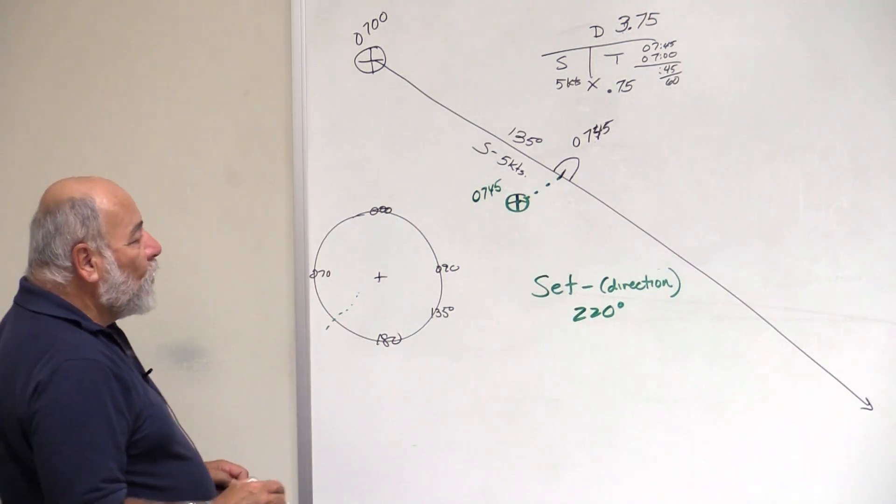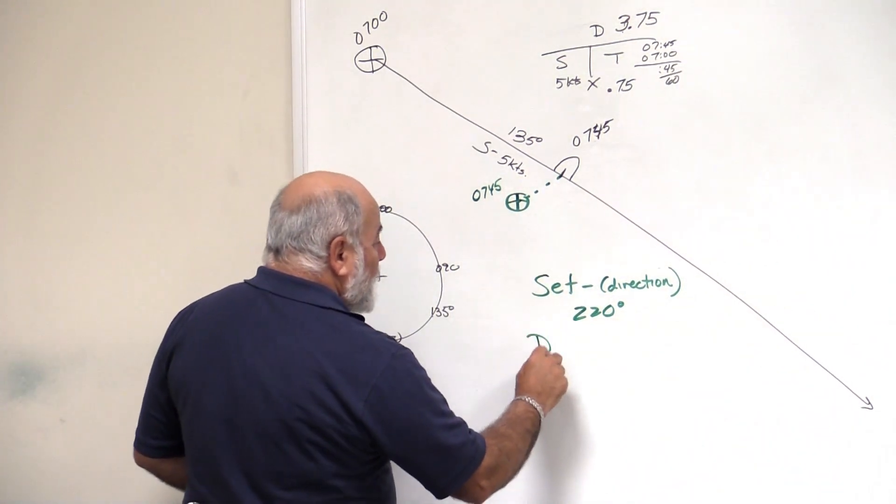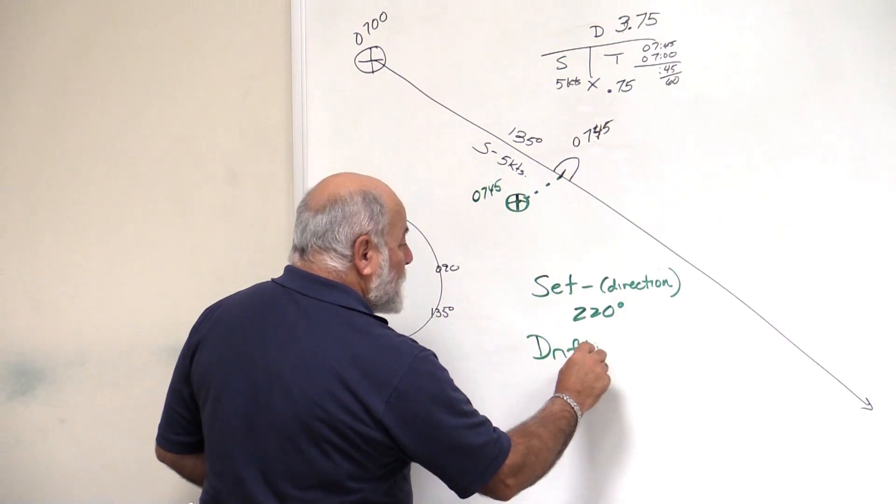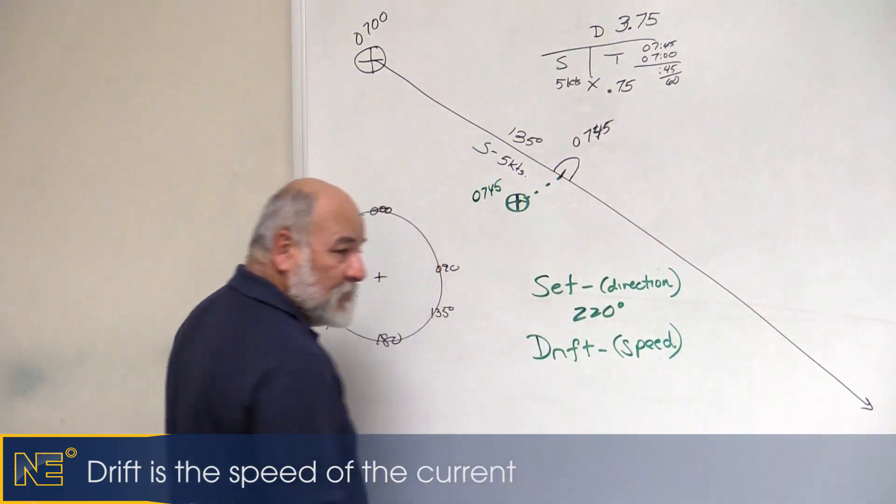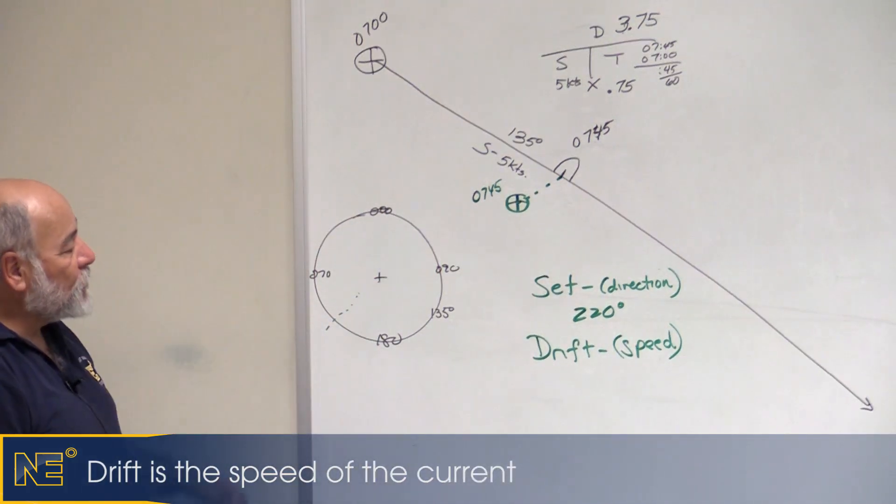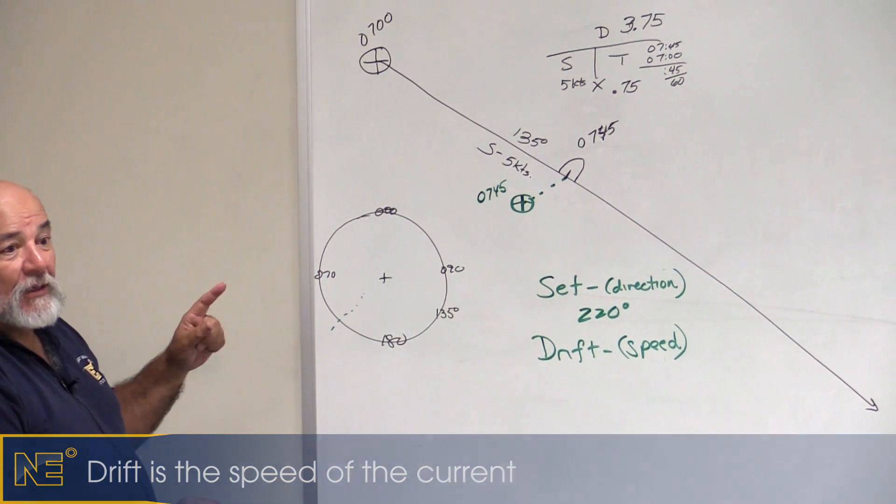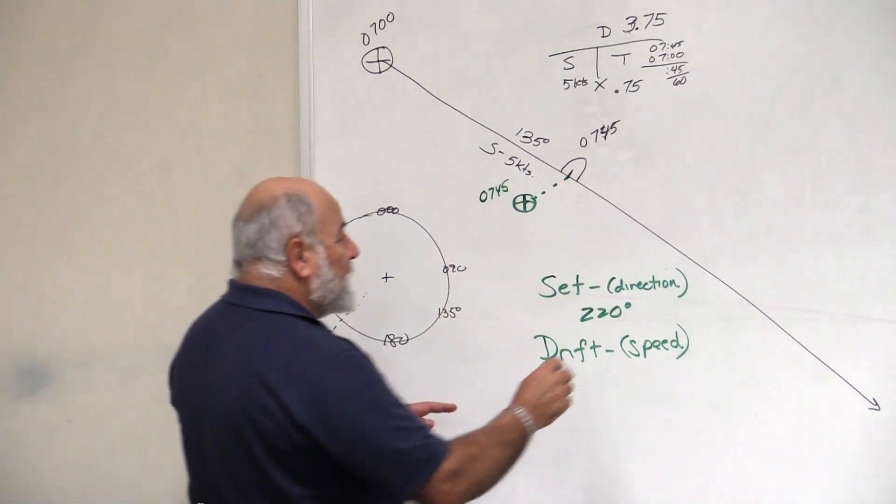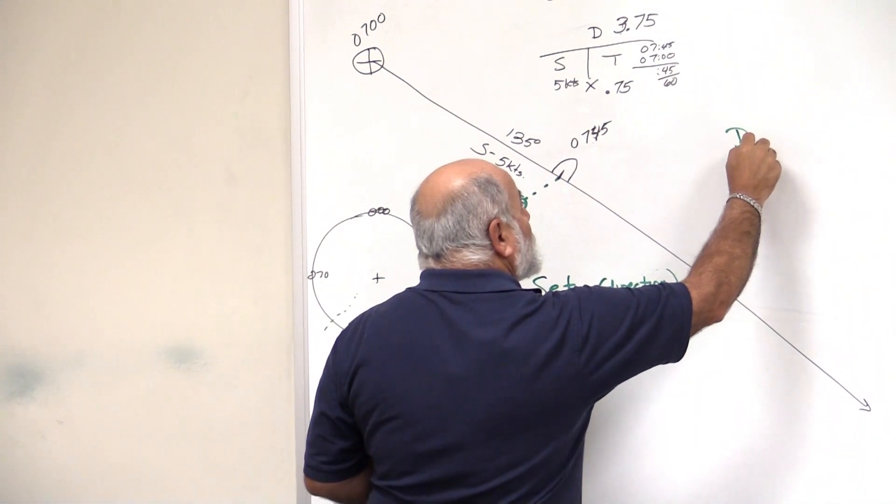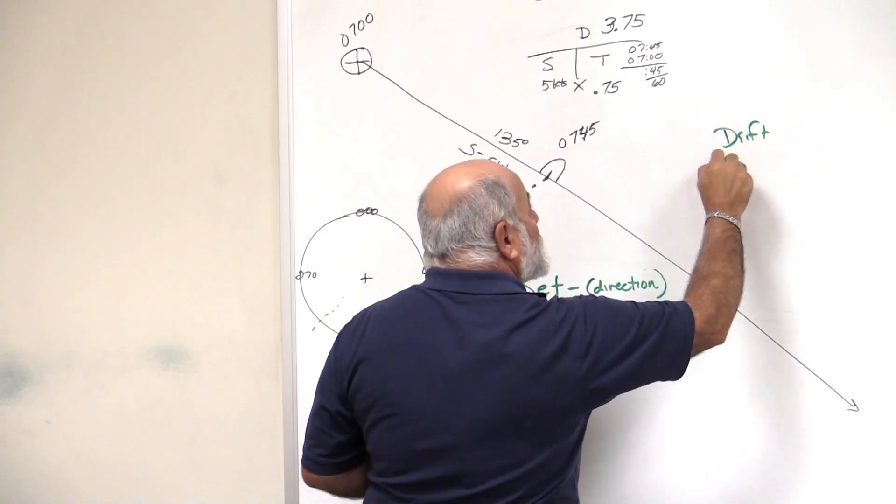Now we want to know the drift, and the drift is the speed of the current. How fast is the current flowing? Well, we're going to do another distance, speed, and time problem. To get our drift, remember we did one for DR, we're going to do a drift one now.